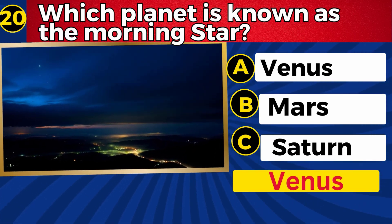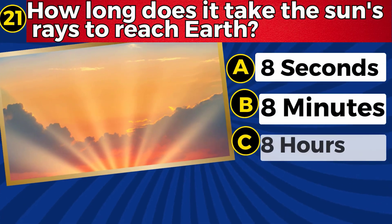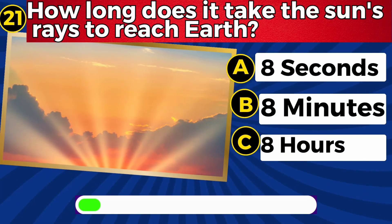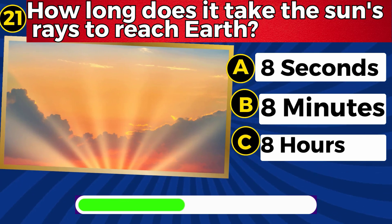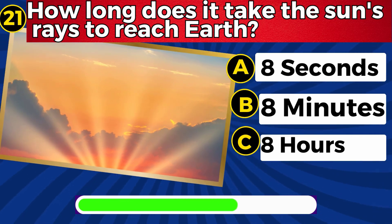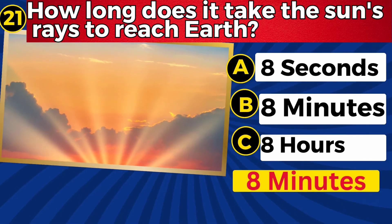How long does it take the sun's rays to reach Earth? 8 minutes.